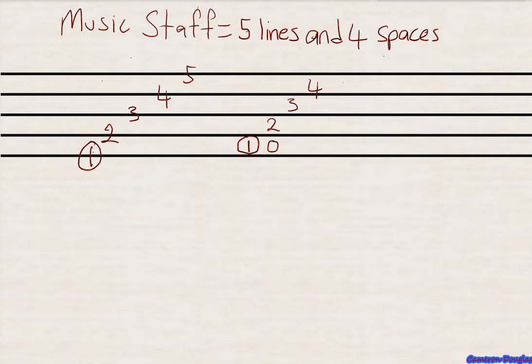That's the music staff. We use the music staff to read and write our musical notes. There are two parts that make up the music staff: the lines and the spaces. There are five lines in the music staff, the first of which starts from the bottom. We have four spaces, and the first space again starts from the bottom. That's the music staff.